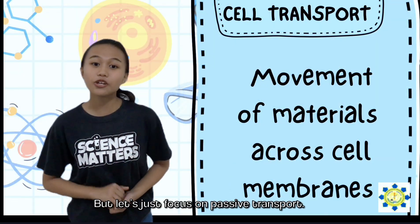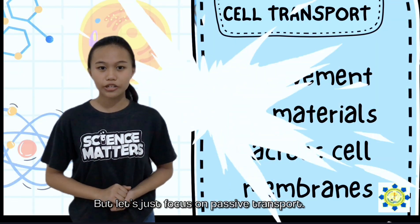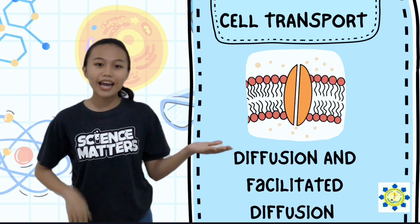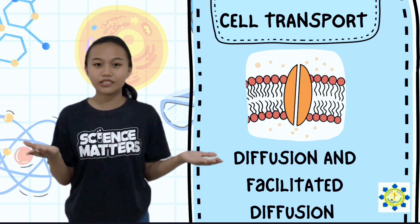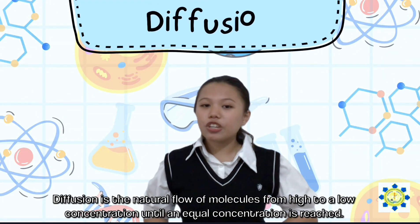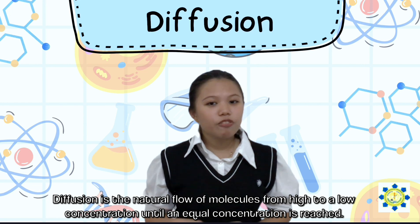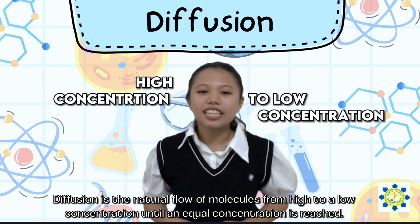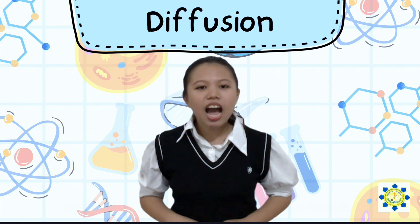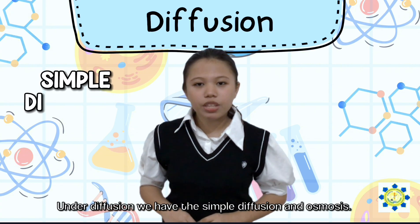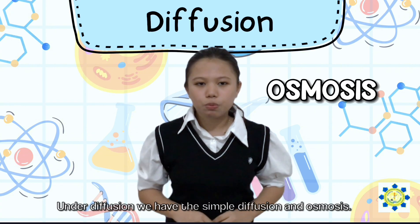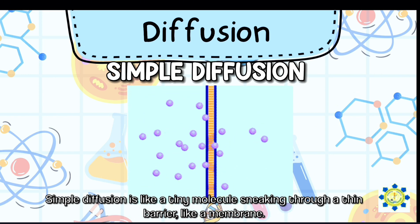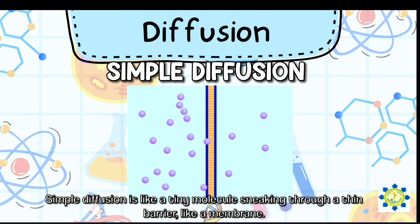But let's just focus on passive transport. There are two kinds of passive transport, which are diffusion and facilitated diffusion. Diffusion is the movement of molecules from high to a low concentration until an equal concentration is reached. Under diffusion, we have simple diffusion and osmosis. Simple diffusion is like tiny molecules passing through a thin barrier like a membrane,